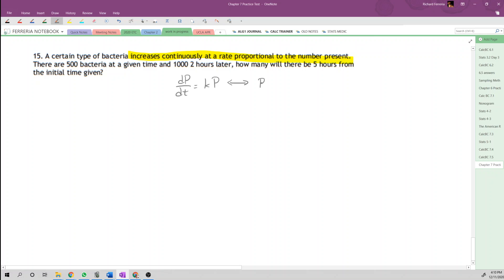We can go right to the general solution for exponential growth: that's a times e to the kt. Now we need to figure out our values of a, k, and t.